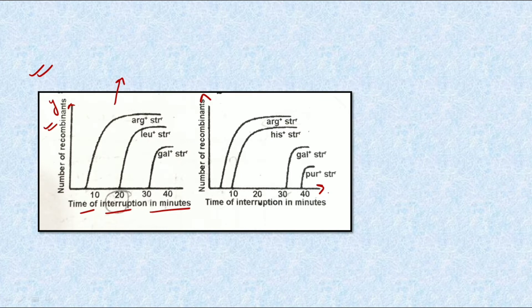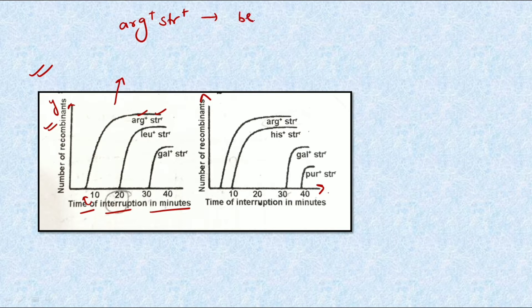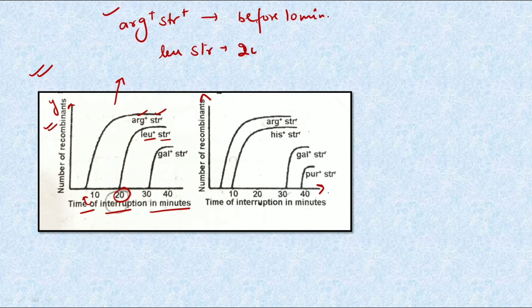From graph one, we can observe that arginine+ and str+ occur before 10 minutes. Leucine and str occur at 20 minutes. Then gal+ and str occur at 30 minutes.